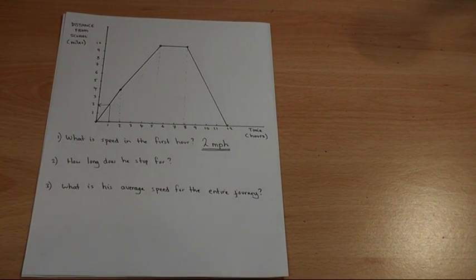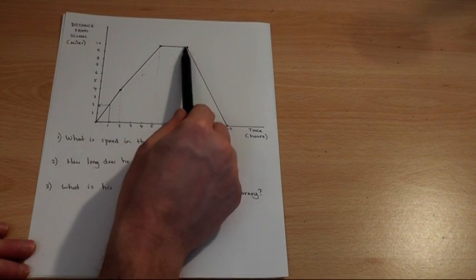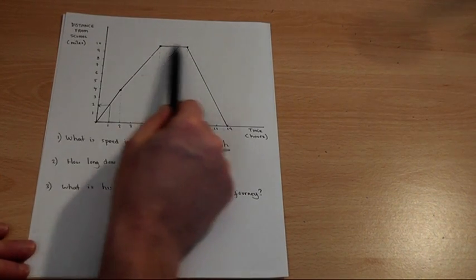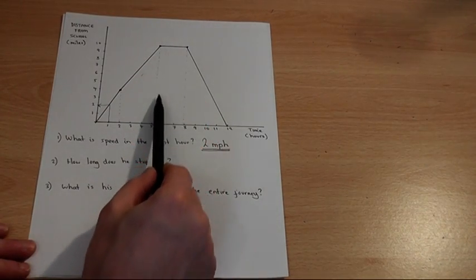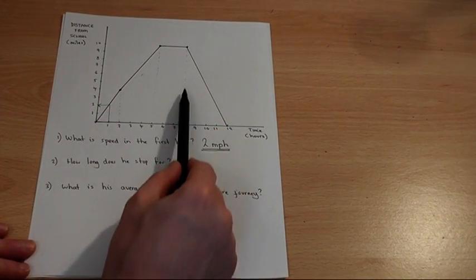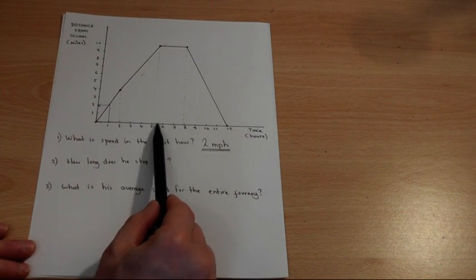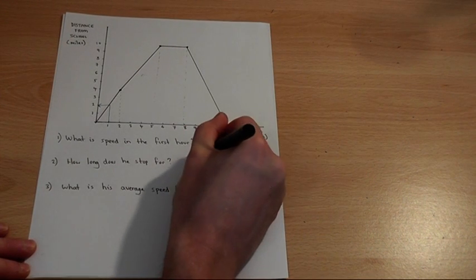Question two says, how long does he stop for? Well stopping is denoted by the horizontal part of the graph where he does not cover any distance. His distance from school is fixed at 10 miles. He is therefore stationary. If we look down from the graph we can see how he is stationary for three hours between five and eight. So he stops for three hours.